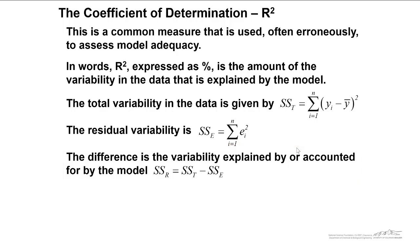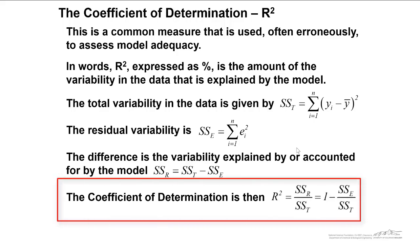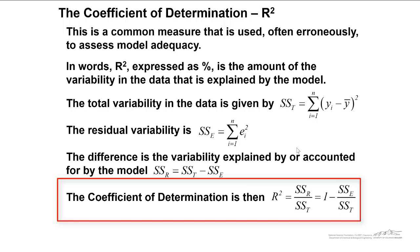So obviously if you have a good model you're going to increase SSR at the expense of SSE. The coefficient of determination is therefore calculated as the ratio of SSR, the regression sum of squares, divided by the total sum of squares. And that's also equal to 1 minus SSE over SST. As I mentioned, R squared is used often erroneously to assess model adequacy.